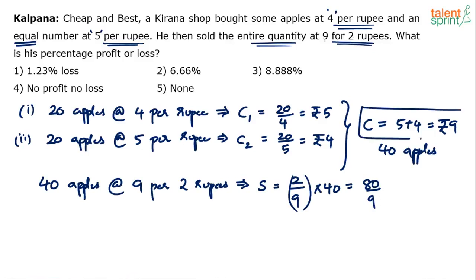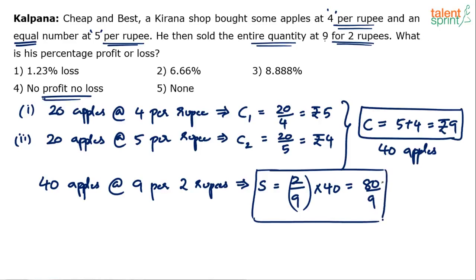Look at this — the total cost price is 9 rupees, but the total selling price is not 9 rupees; it is less than 9 rupees. If there were no profit no loss, selling price would equal cost price. But the selling price is 80 by 9, which is slightly less than 9. So it is definitely a loss — you've spent 9 rupees but earned only 80 by 9 rupees.